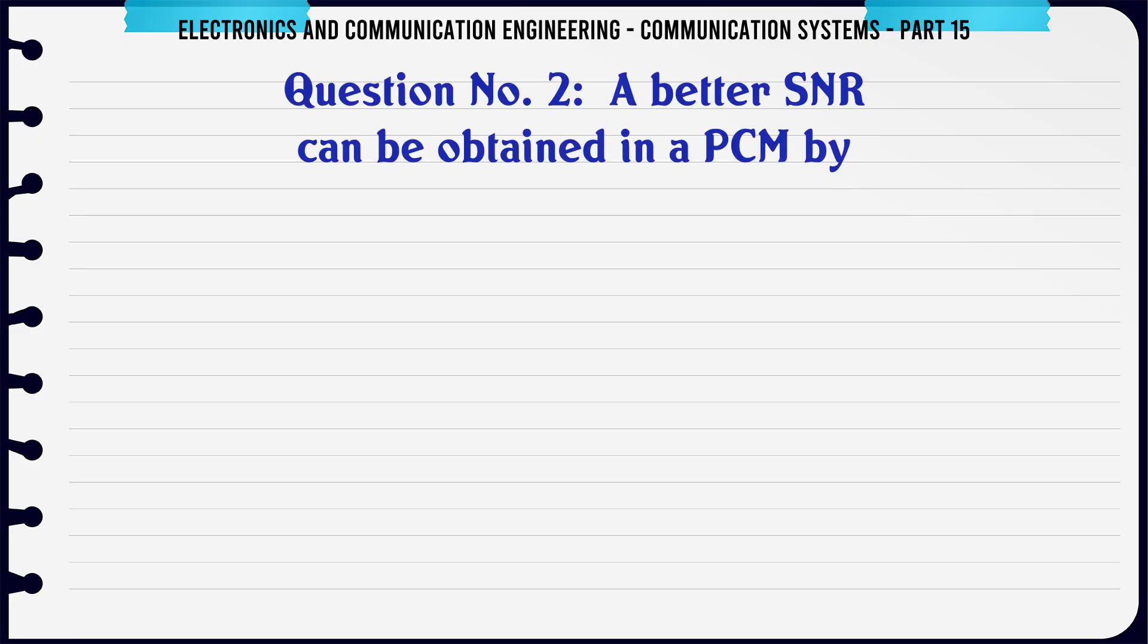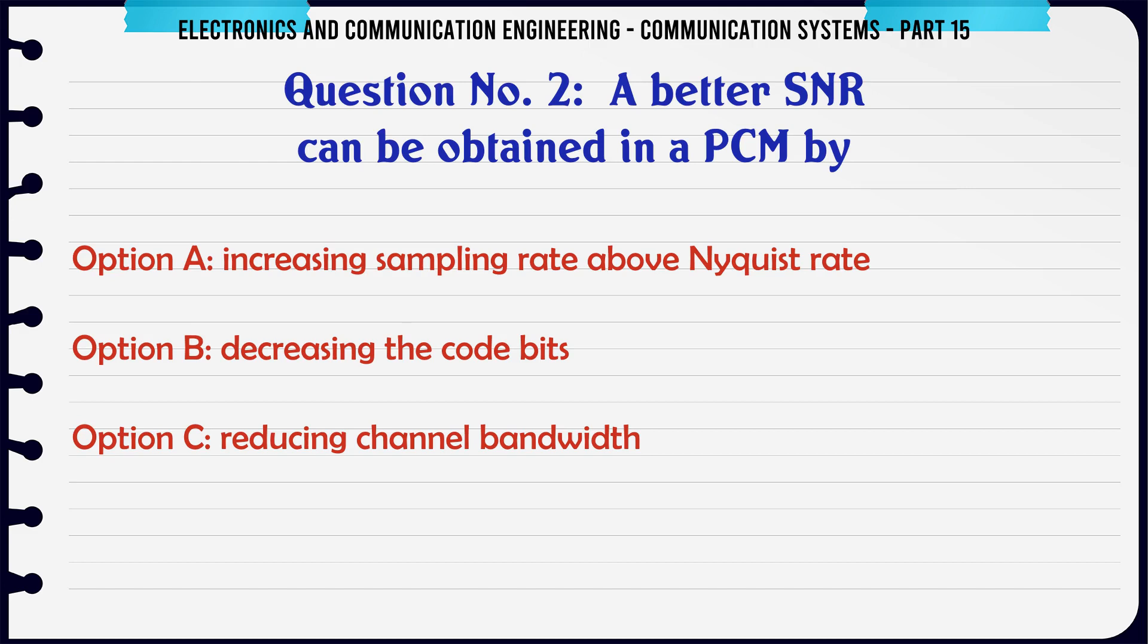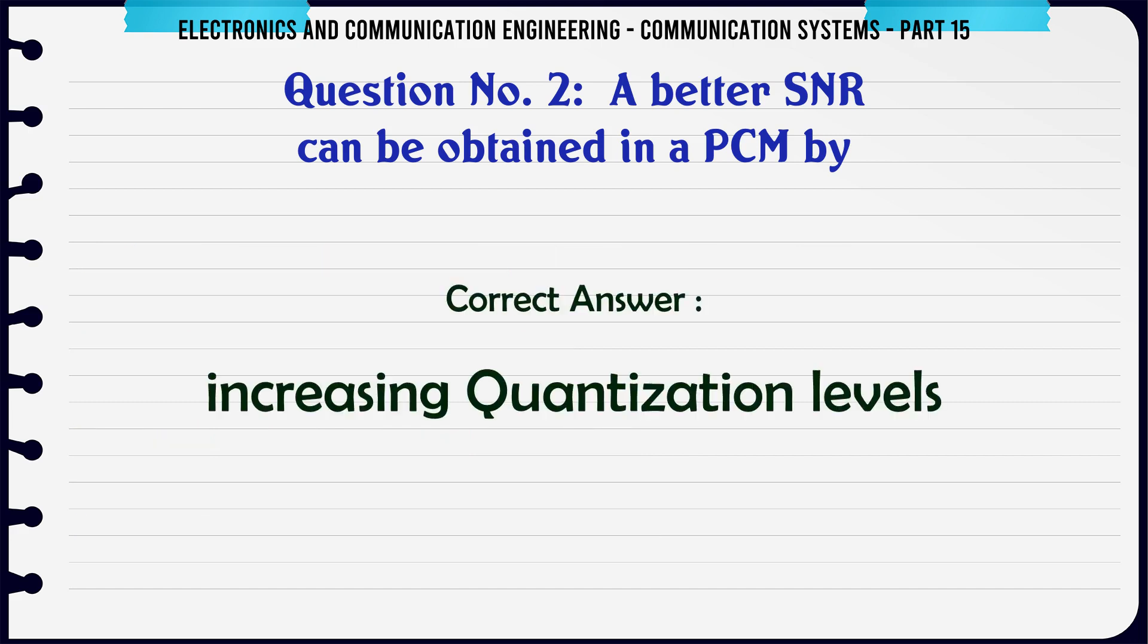A better SNR can be obtained in a PCM by: a increasing sampling rate above Nyquist rate, b decreasing the code bits, c reducing channel bandwidth, d increasing quantization levels. The correct answer is increasing quantization levels.